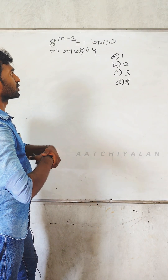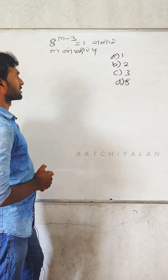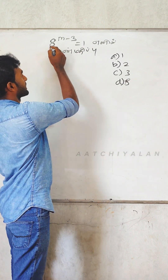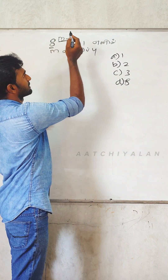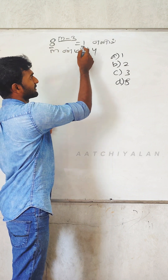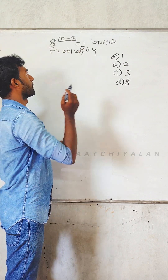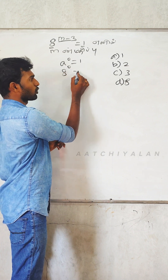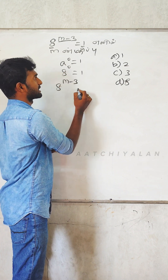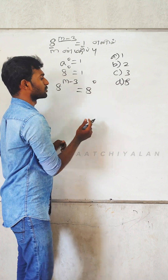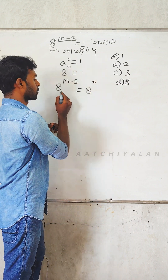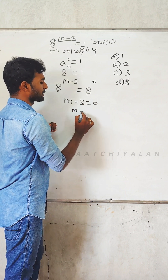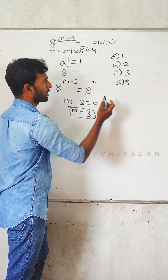8 power (m minus 3) is equal to 1 — find m. This question is easy. If base is equal to power (m minus 3), then base is equal to 8. If anything to the power 0 is equal to 1, then 8 power 0 is equal to 1. So base equals 0, meaning m minus 3 equals 0, so m is equal to 3. Answer is 3.